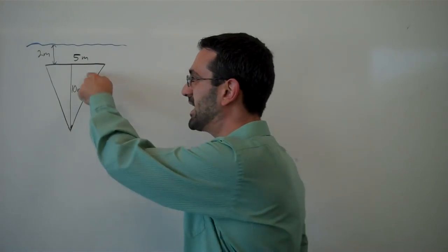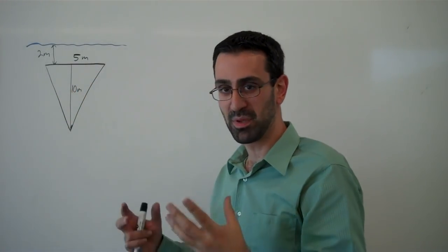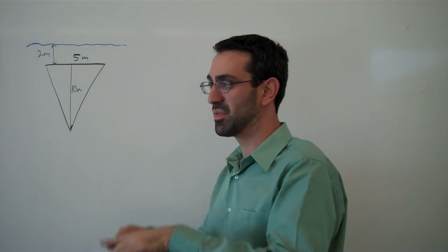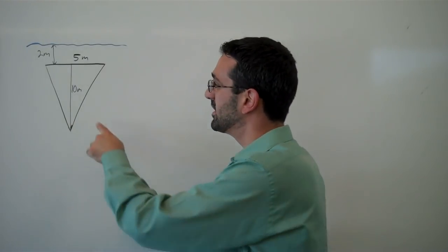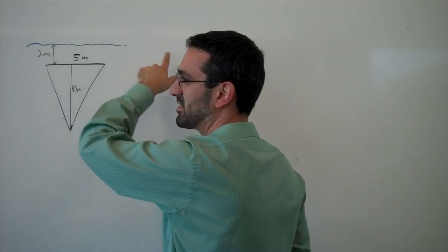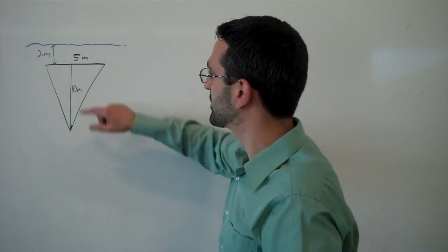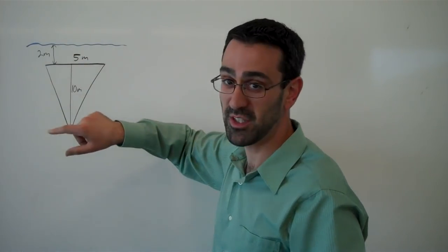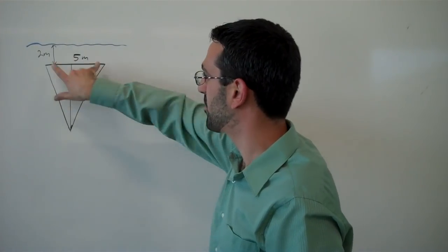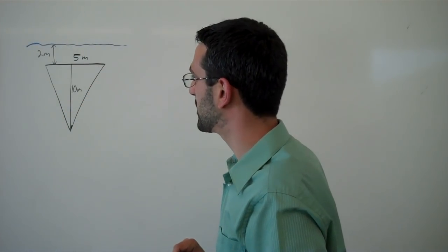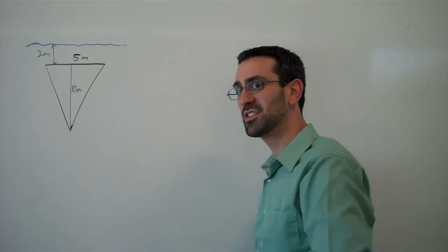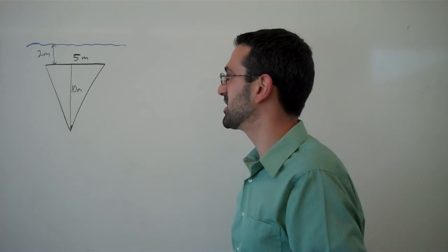We have a triangular face, like a plate, perhaps a plate of metal or something like that, submerged into a tank of water so that the top of the plate is 2 meters below the water level. Our plate is 5 meters wide, 10 meters tall, and we want to find the hydrostatic force on this plate.